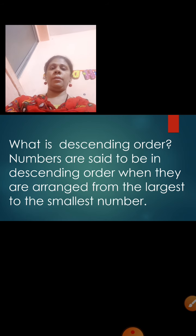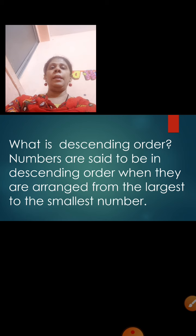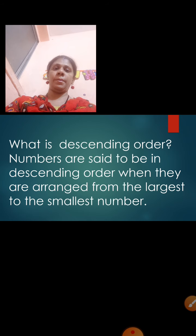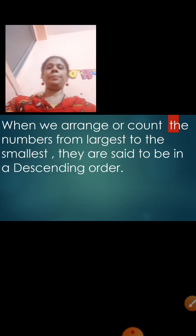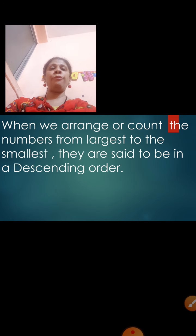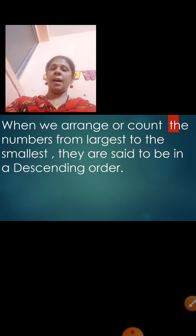Now what is descending order? Numbers are said to be in descending order when they are arranged from the largest to the smallest number. When the numbers are arranged from the largest to the smallest, they are said to be in descending order. In ascending order we go from smallest to largest; in descending order we go from largest to smallest.